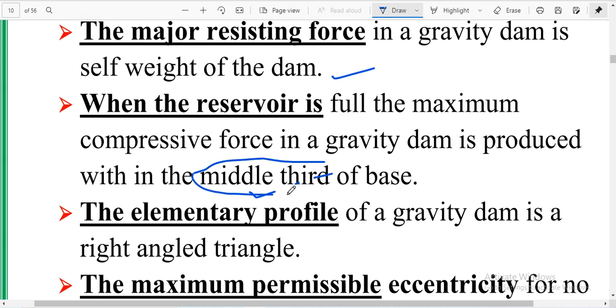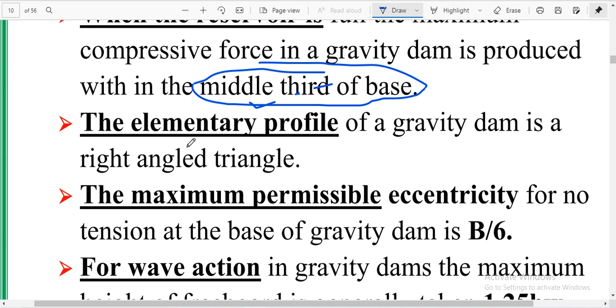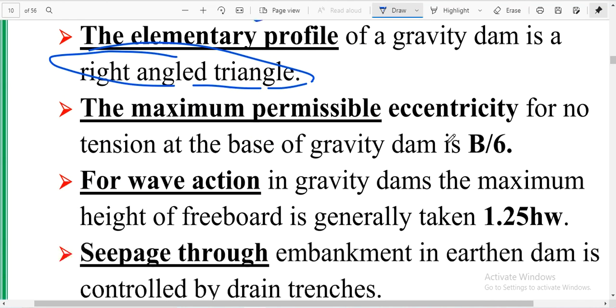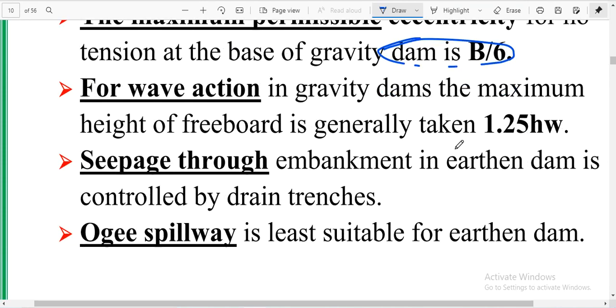The elementary profile of a gravity dam is a right angle triangle. The maximum permissible eccentricity for no tension at the base of the gravity dam is B/6. Due to wave action, a gravity dam has maximum height of freeboard, generally taken as 1.25 of hw.